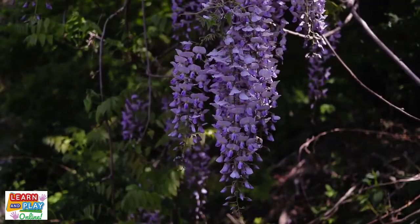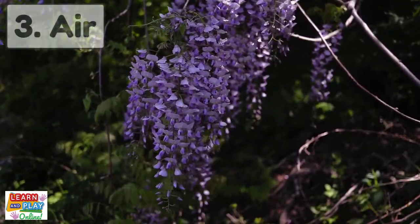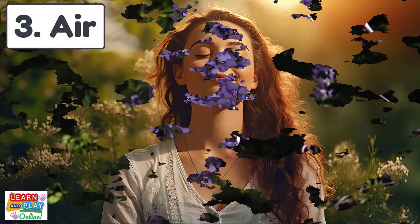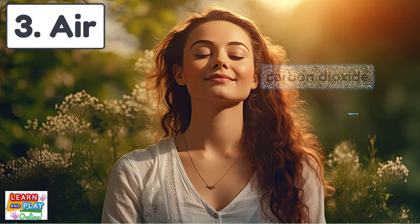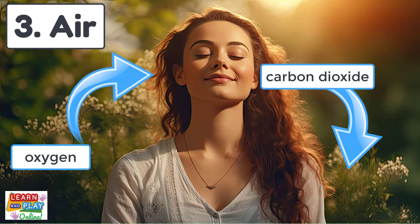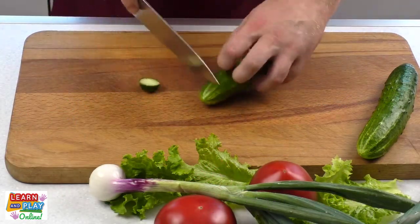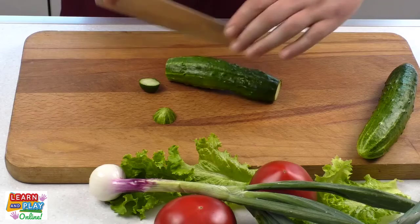Just as humans need air to breathe, plants rely on air for survival as well. Plants turn the carbon dioxide we breathe out into oxygen that we can then breathe in. Without air, plants wouldn't have the energy they need to produce their own food.